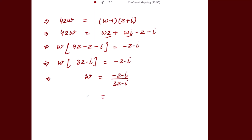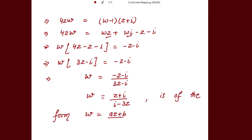From here we get w = (-z - i)/(3z - i), which can be rewritten as w = (z + i)/(i - 3z). This is the required bilinear transformation, and it is of the standard form w = (az + b)/(cz + d).